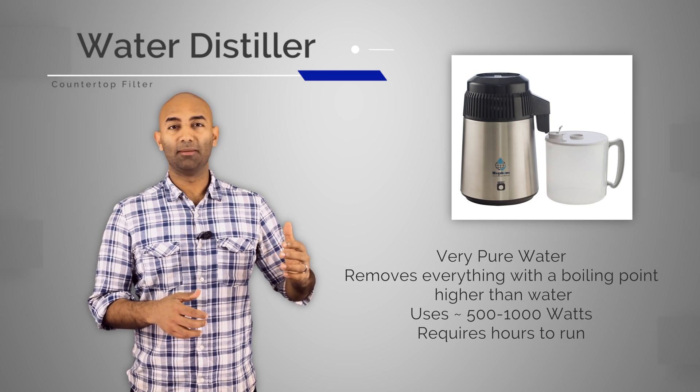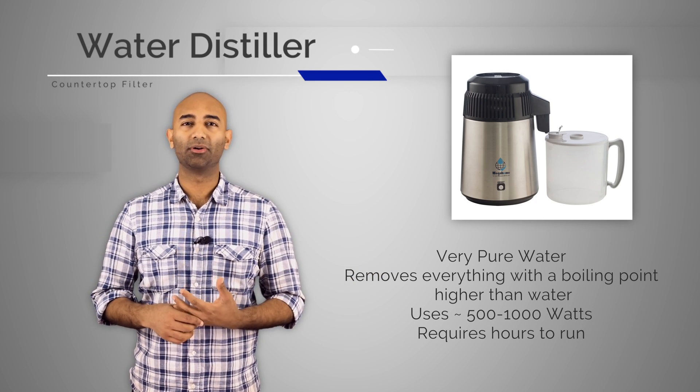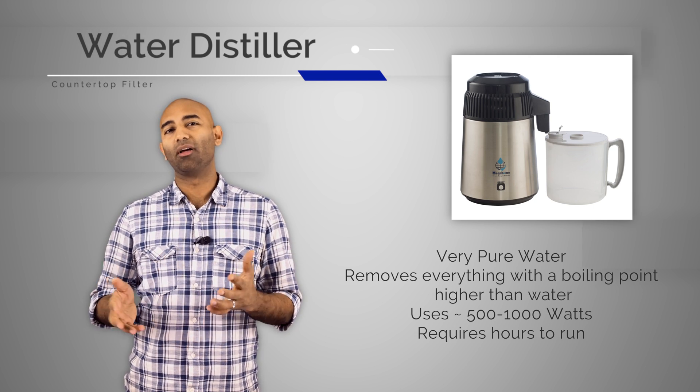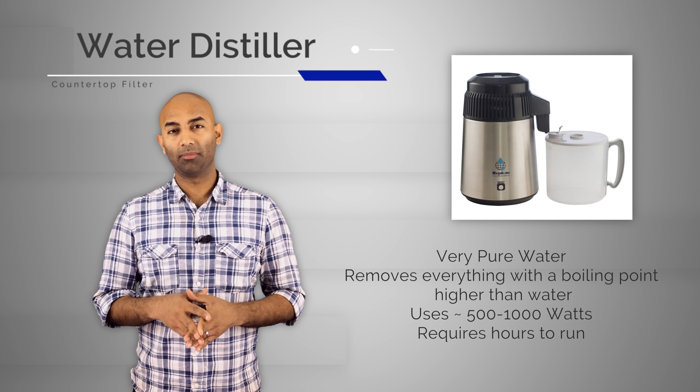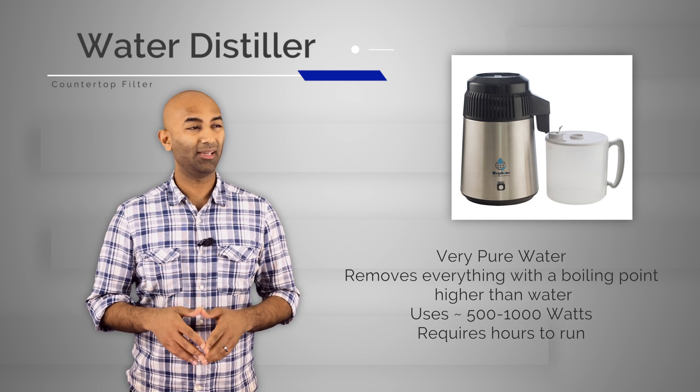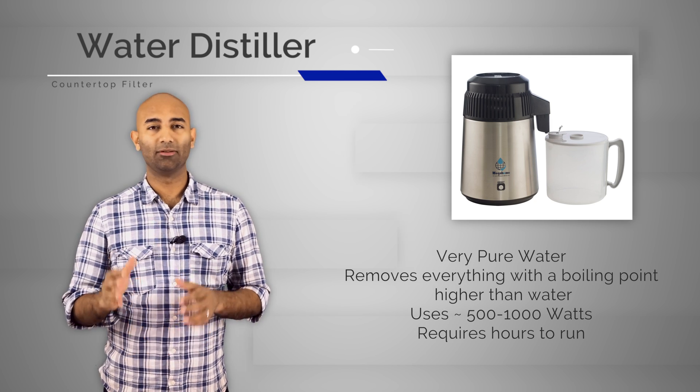To put in context a big screen TV runs on about 150 watts and a big gaming computer or a video editing computer might run on three to four hundred, so it's a lot of power. Also the flow rate is also a problem here and it's actually much worse than the Berkey because it takes five to eight hours to get water out of it which means that you have to plan ahead and run this thing every night.